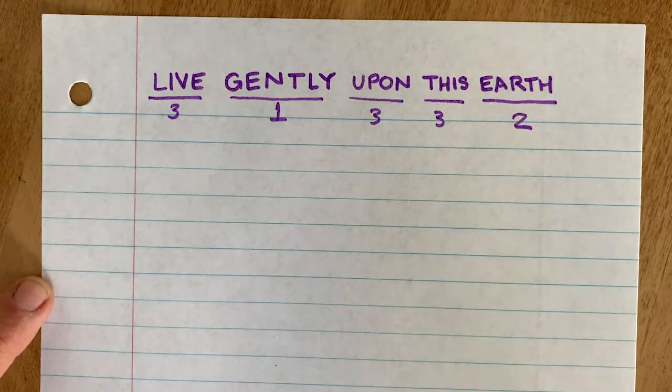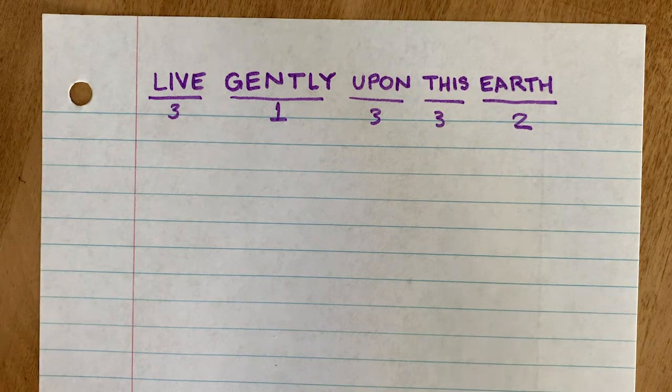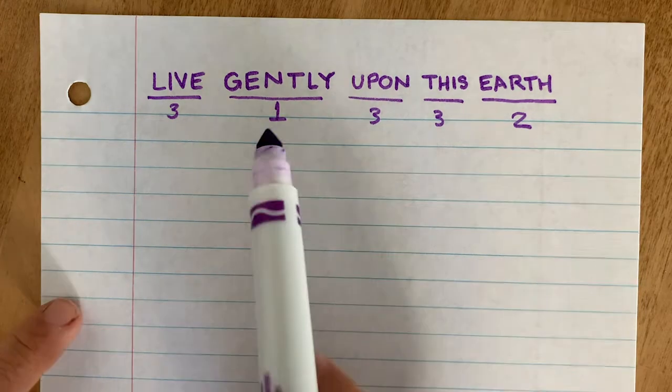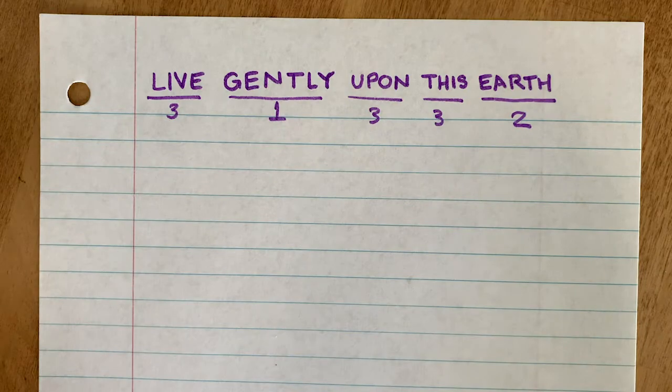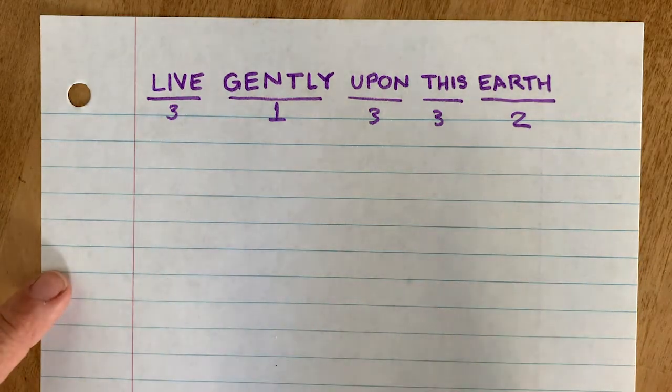Having three levels is good. More than three is probably too much. So you want to have one really important word, maybe two really important words. You could have two levels. Like I could have gently and earth on one level and then live, upon, and this as being less important. Or I could break it down into three levels.